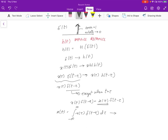We know that each of these individual slices, X(τ)delta(t-τ), leads to X(τ)h(t-τ). So this is going to lead to, through linearity, the integral from minus infinity to infinity of X(τ)h(t-τ) dτ.